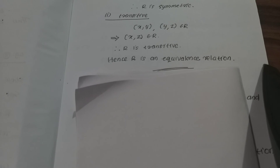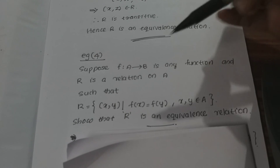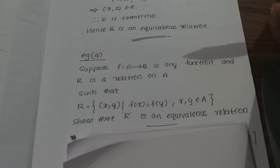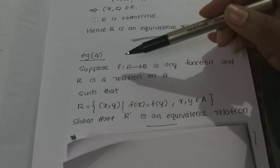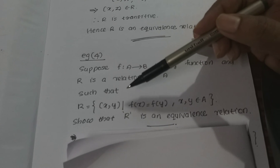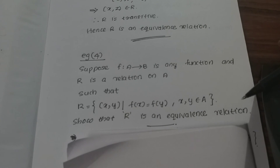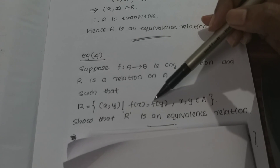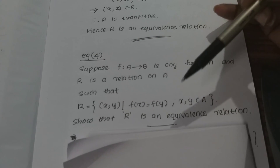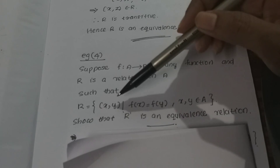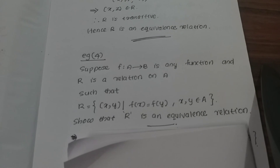Example 4: Suppose f from A to B is a function, and R is a relation on A such that R is an equivalence relation, defined by (x, y) belongs to R if f(x) equals f(y). We have a function where elements x and y have the same image under f.